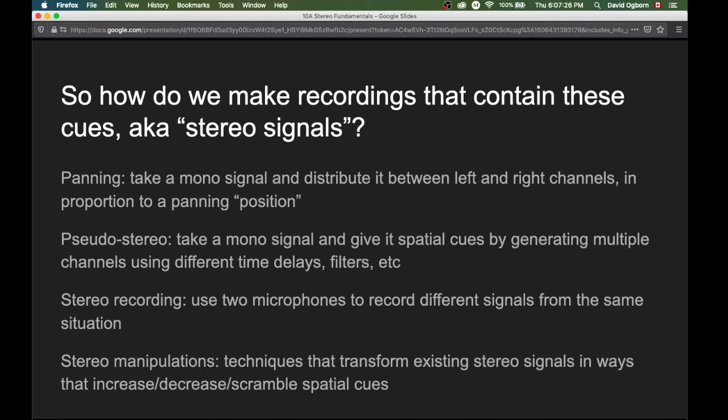And finally, there are also stereo manipulations. These are processing techniques where we take existing stereo signals and we transform them in various ways that increase or decrease or scramble the spatial cues in those existing stereo recordings. So we have these four different ways of making stereo signals, and they're all useful in different times and places.